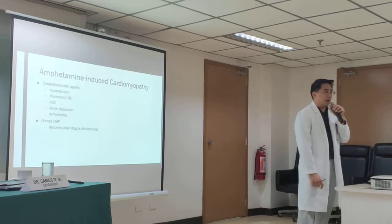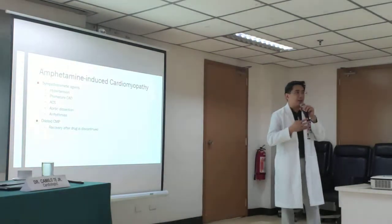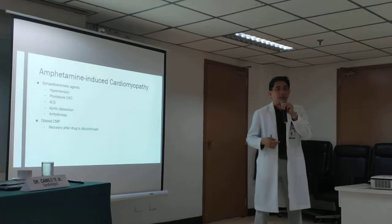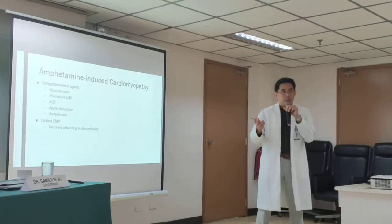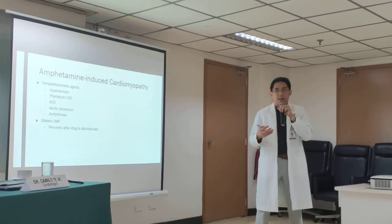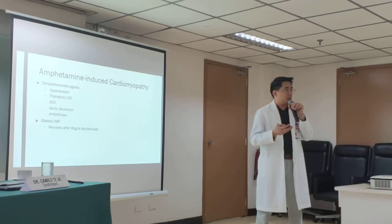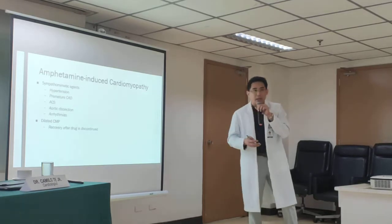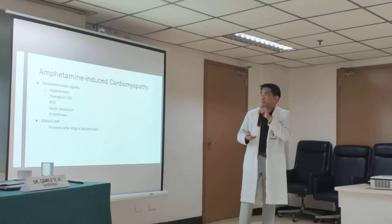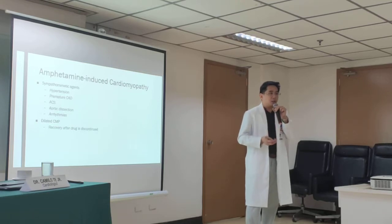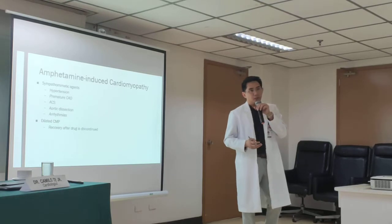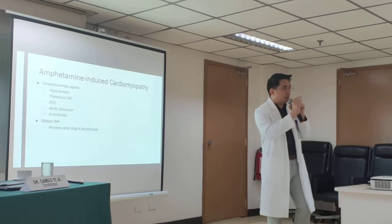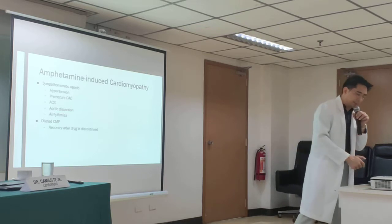In our country, the more common drug is shabu or methamphetamine-induced cardiomyopathy. It is very similar to cocaine since both are sympathomimetic agents — uppers — that cause hyperactivity. You get hypertension, premature coronary artery disease, MI, acute coronary syndrome, aortic dissection, and arrhythmias. Similar to cocaine and alcohol, amphetamine-induced cardiomyopathy is reversible. The first step is always to stop the offending agent. If you stop taking shabu, you have a good chance of recovery — unless there is already fibrosis or permanent damage.